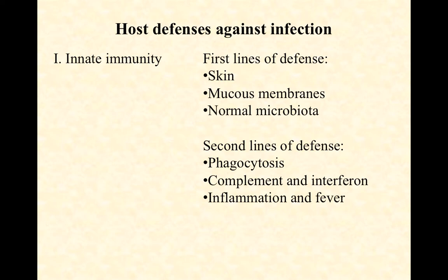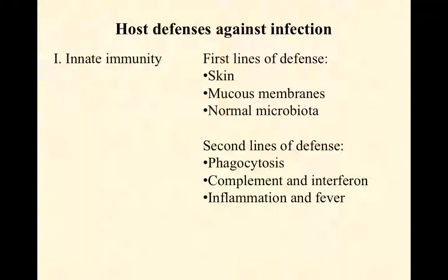In the earlier videos, we looked at our first lines of defense: skin, mucous membranes, and normal flora. What we're going to do now is start looking at our second lines of defense. In this video specifically, we're looking at phagocytosis. I'll be looking primarily at phagocytic white blood cells, but understand that the process is quite similar in the phagocytic dendritic cells we talked about earlier.